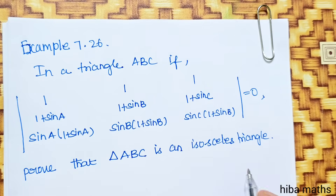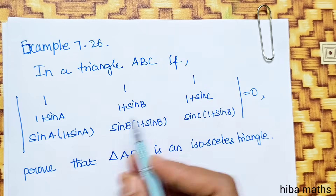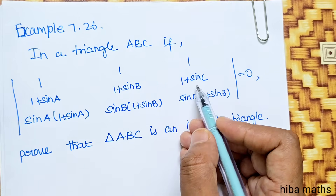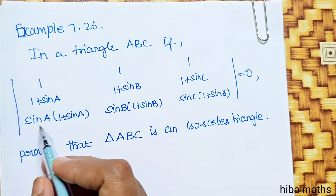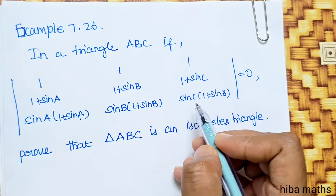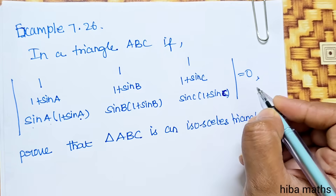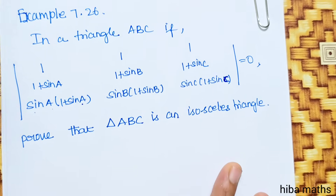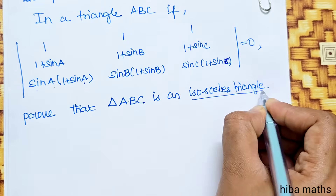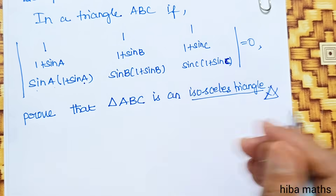Example 7.26: In a triangle ABC, if the determinant with entries 1, 1, 1 | (1+sin A), (1+sin B), (1+sin C) | sin A(1+sin A), sin B(1+sin B), sin C(1+sin C) is equal to 0, prove that triangle ABC is an isosceles triangle.